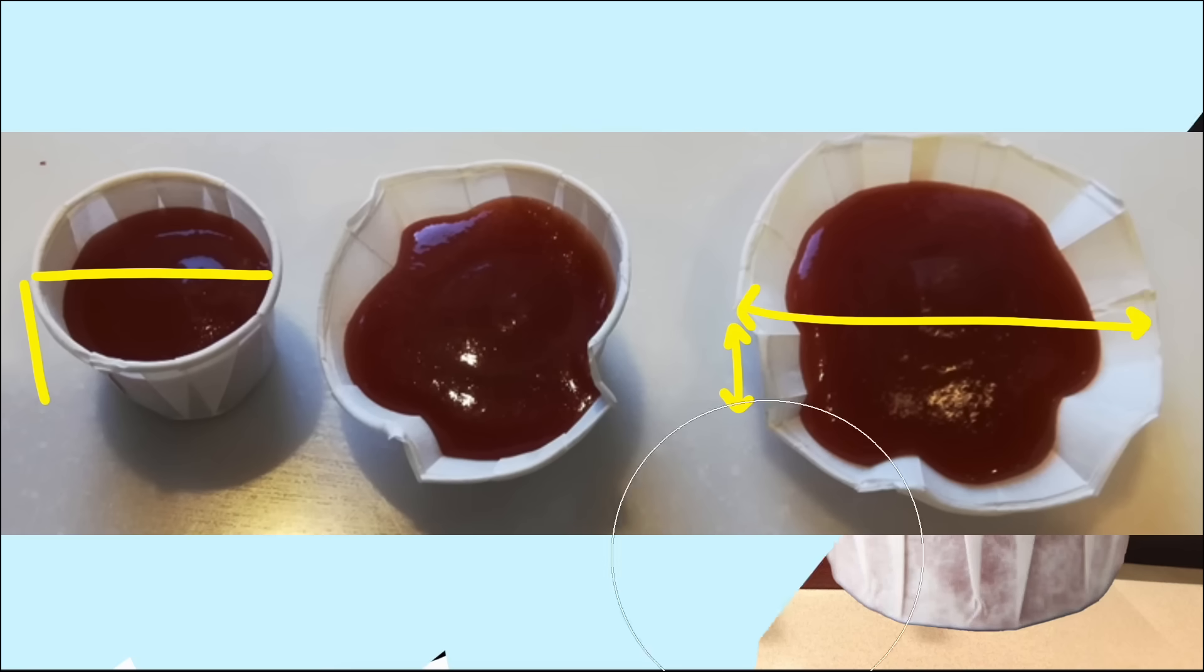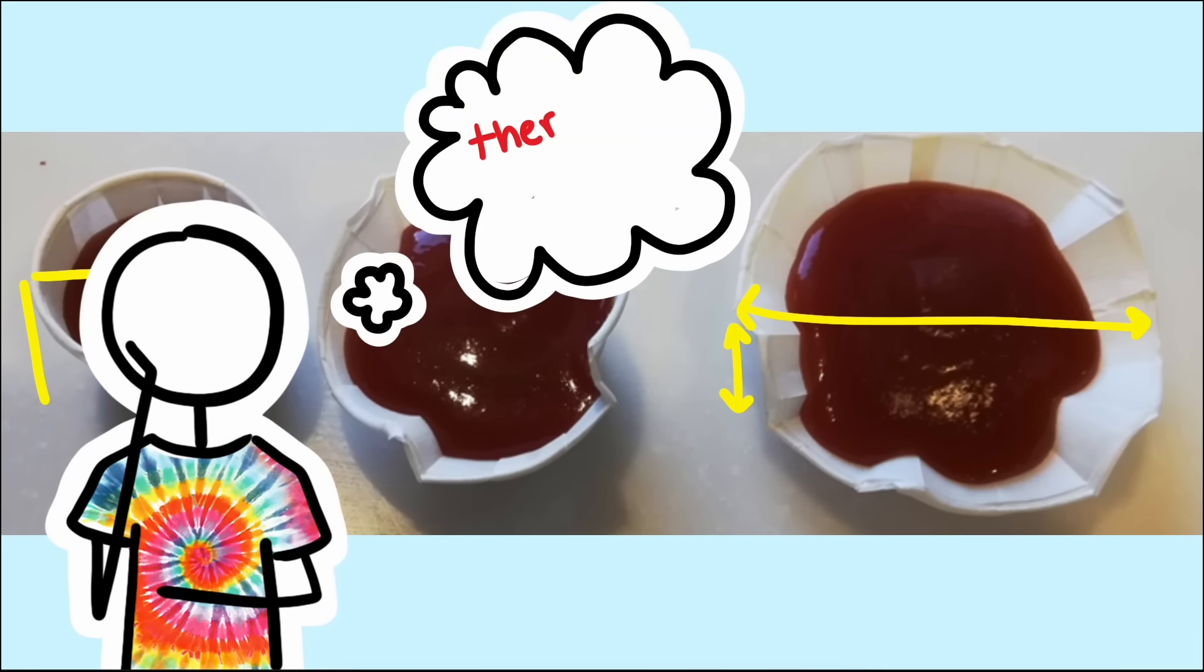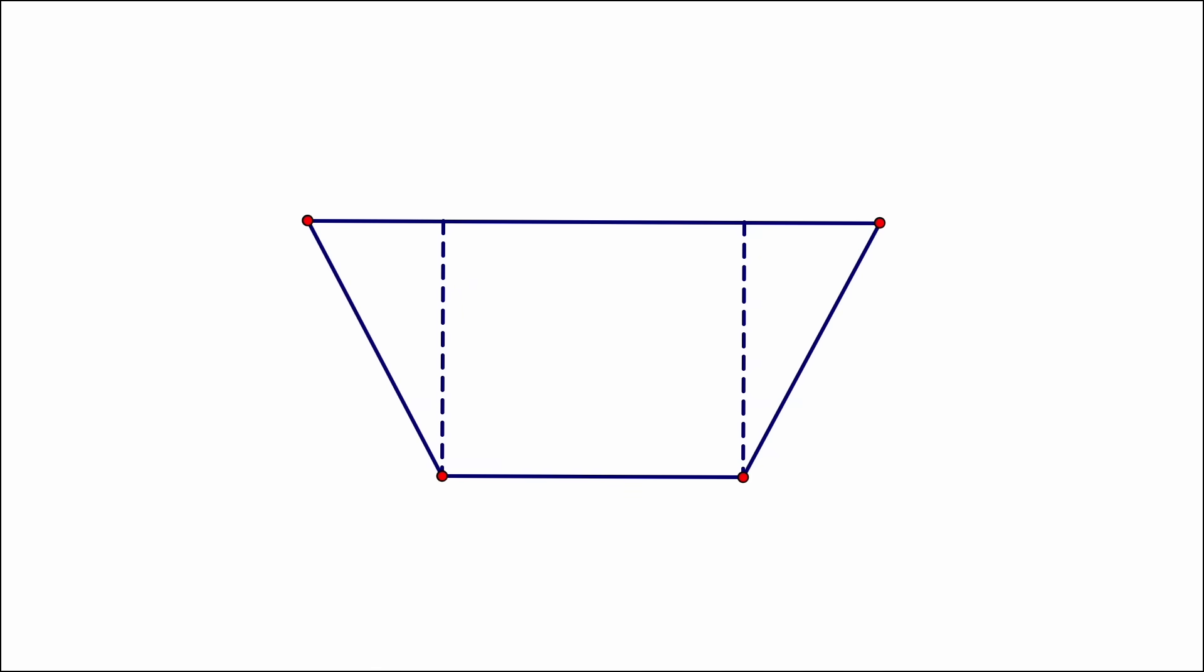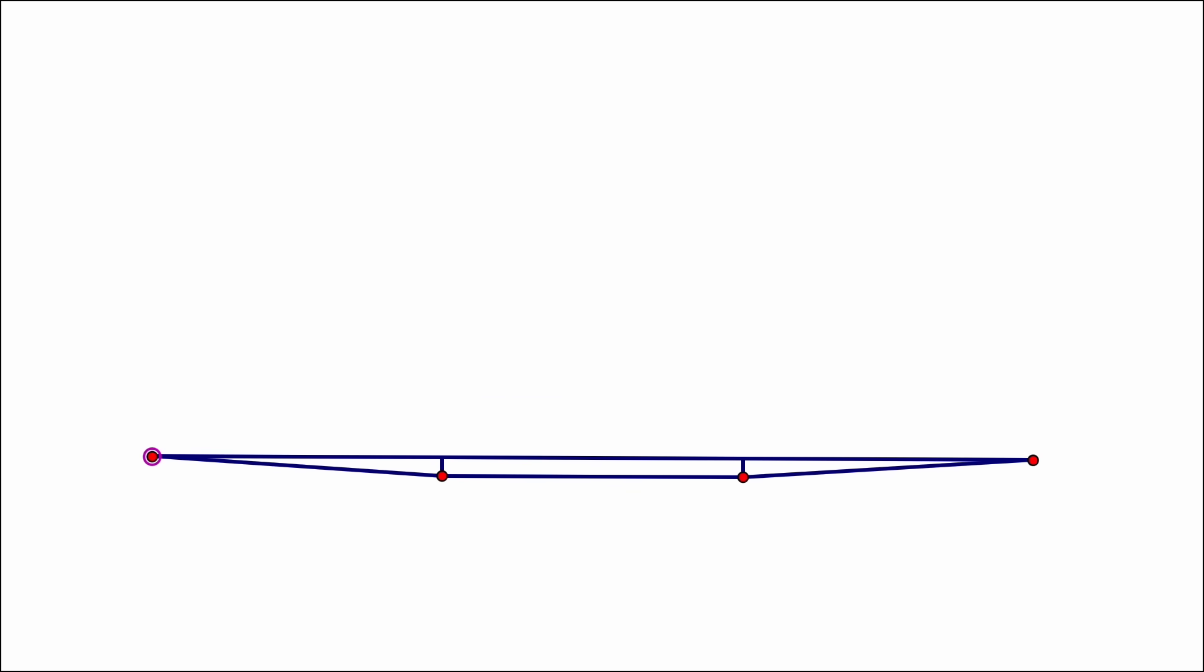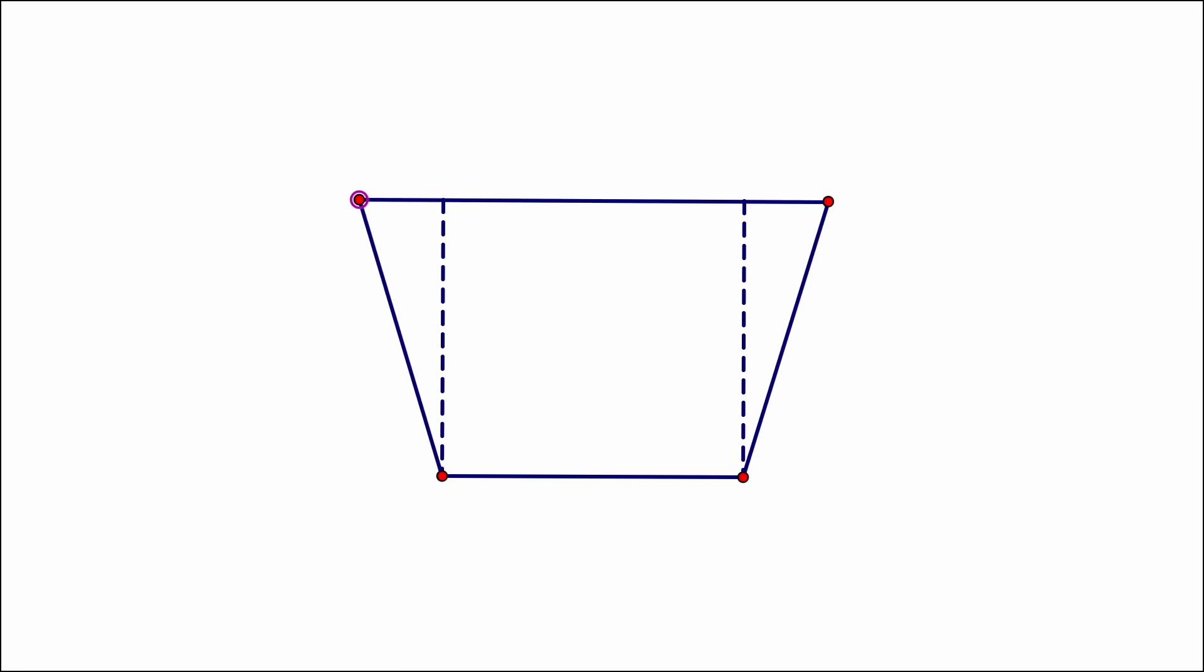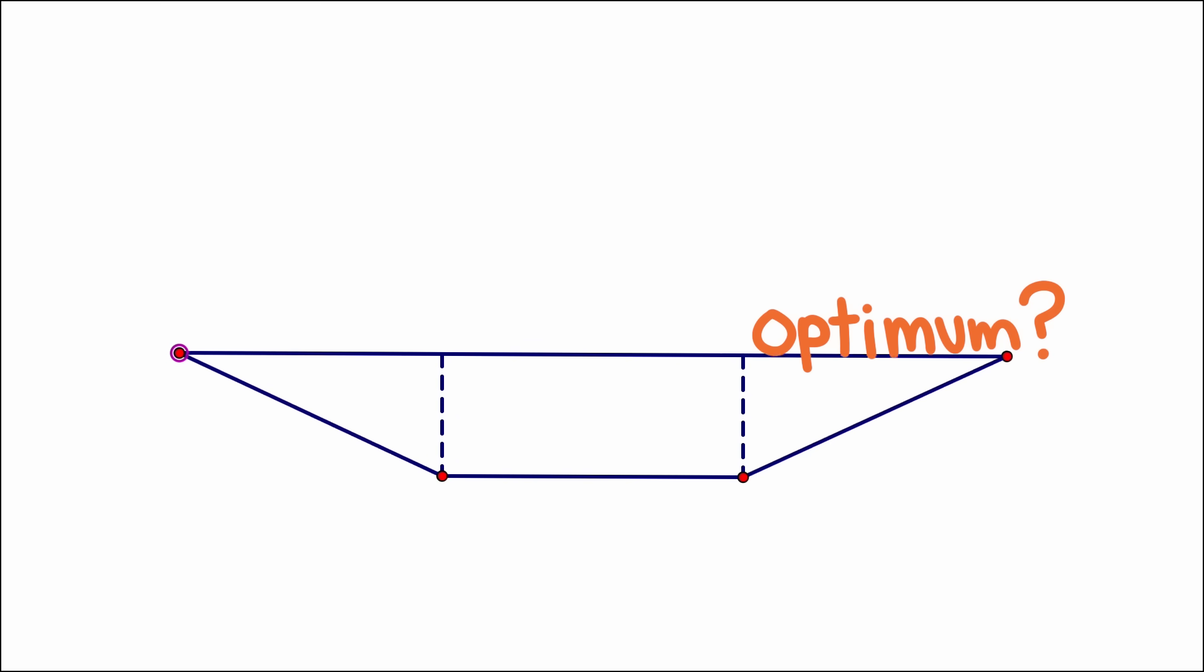So what did I do as a math nerd? I realized that there had to be an optimal angle for the sides to spread out so that the cup would hold the most sauce. If you opened it all the way out, it would be flat and not hold much sauce. And if you pushed the sides in, it would decrease the amount of sauce the cup could hold. So somewhere in the middle there had to be a maximum volume.